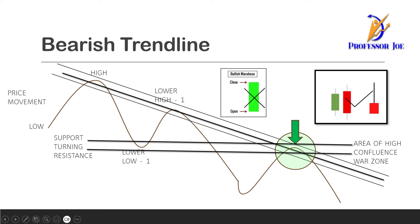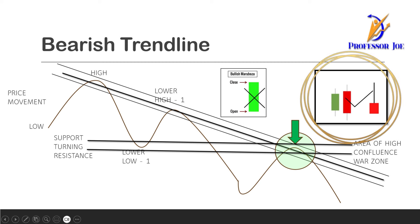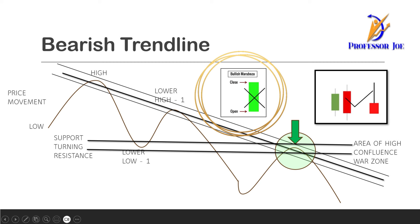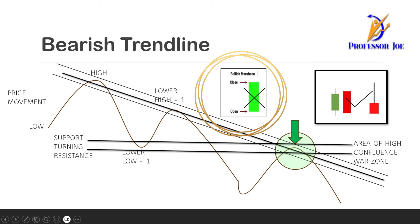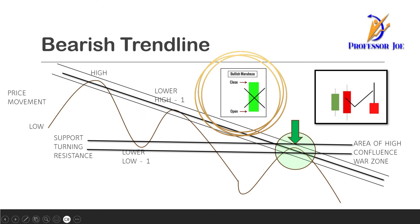If you find candlesticks like a bearish engulfing pattern or a shooting star, that gives you a clear indication that the psychology at that confluence area is bearish — the bears are stronger. You can go for a sell call and put your stop loss above the resistance area. At that confluence area, if you see a Marubozu — a big green candle breaking through the resistance zone and the trend line — that means the psychology of the bulls is very strong. The chances are that it is going to be a breakout trade and the price is going to go up from there. If you see a Marubozu or a bullish engulfing candle, avoid entering a trade there.